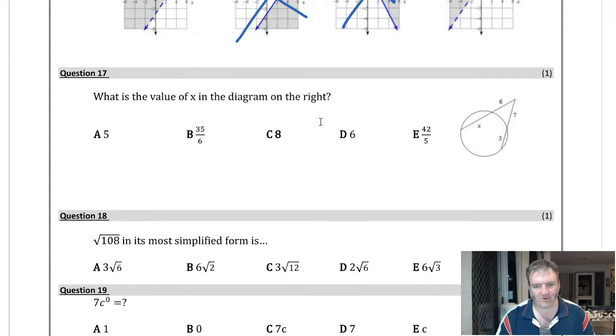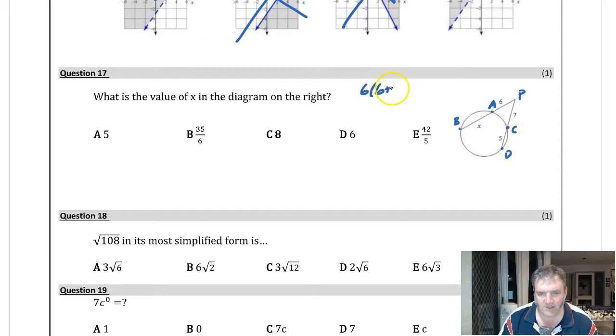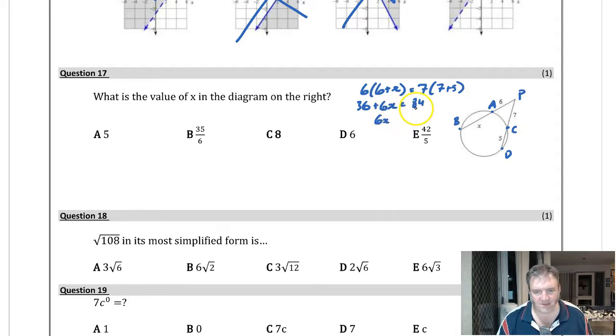What's the value of x in the diagram on the right? So here you need to know that it's the distance from the point to each of the other points. So here we have PA multiplied by PB, and that would be the same as PC multiplied by PD. So what have I got? I've got 6 multiplied by 6 plus x, and that's going to equal 7 multiplied by 7 plus 5. It's just a bit of maths now. 36 plus 6x equals 7, 12 is 84. Subtracting 36 from 84, and I will have 6x is equal to 48.